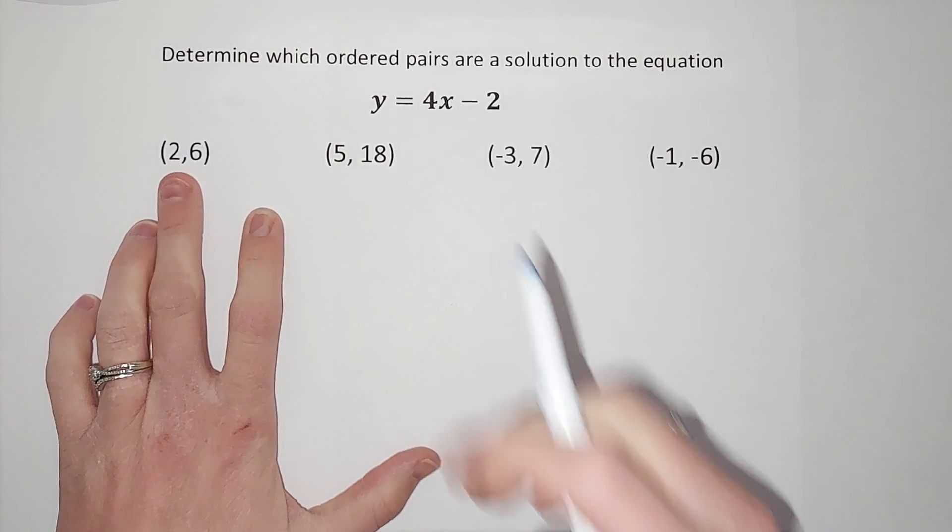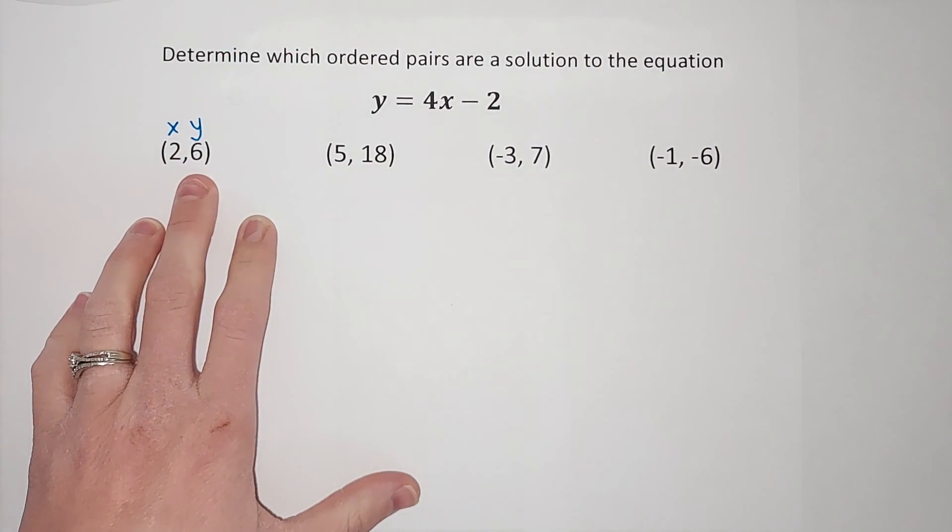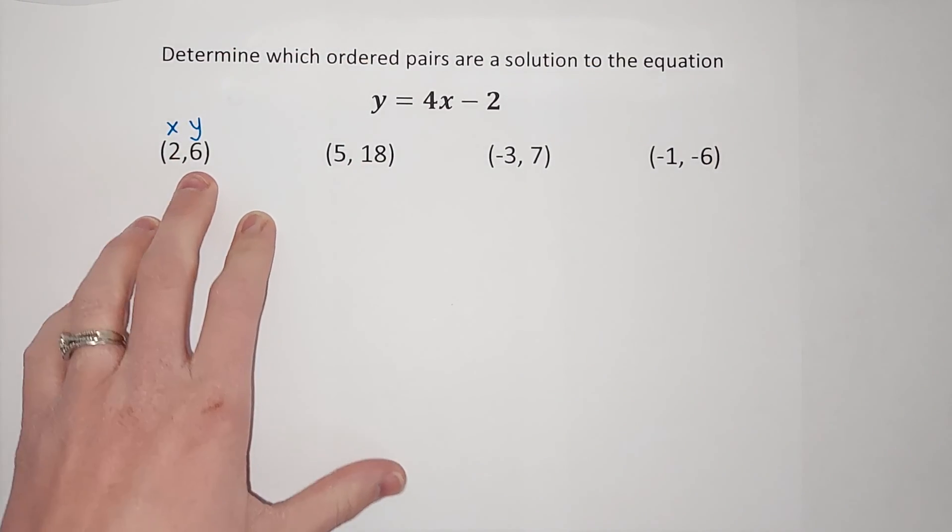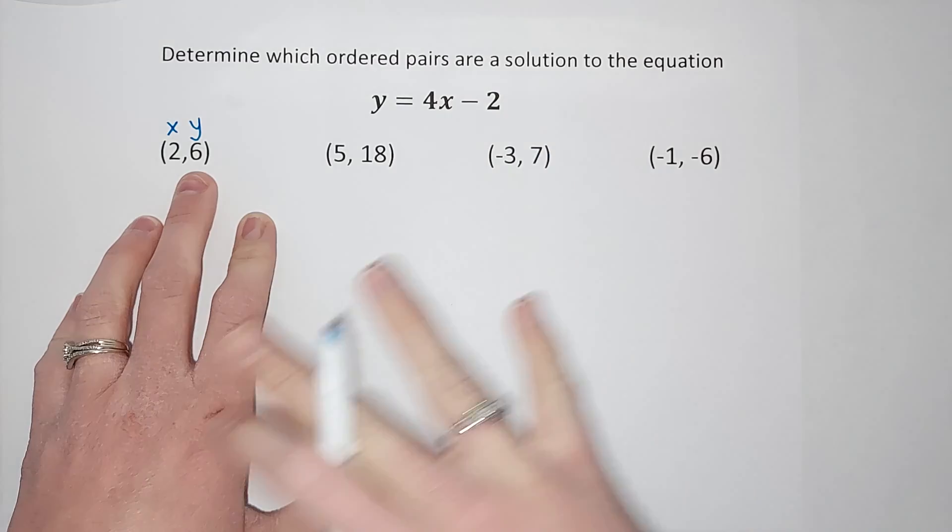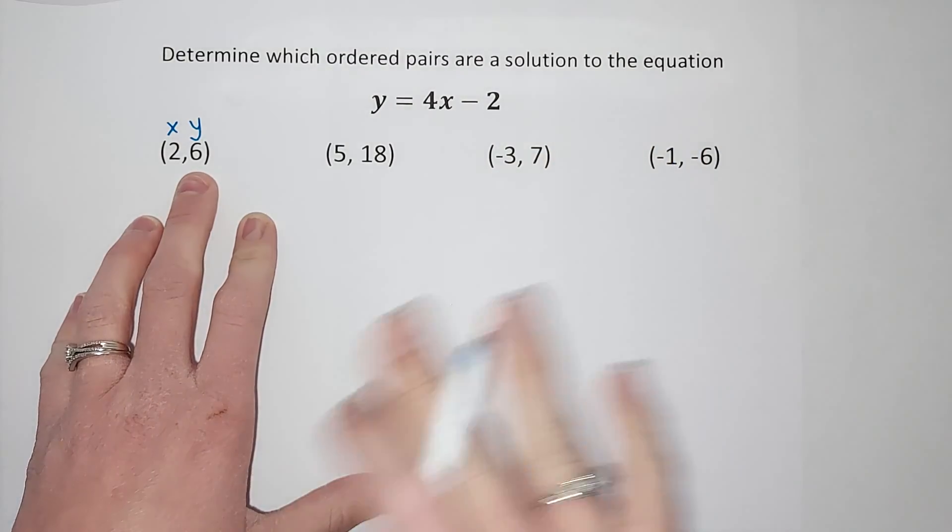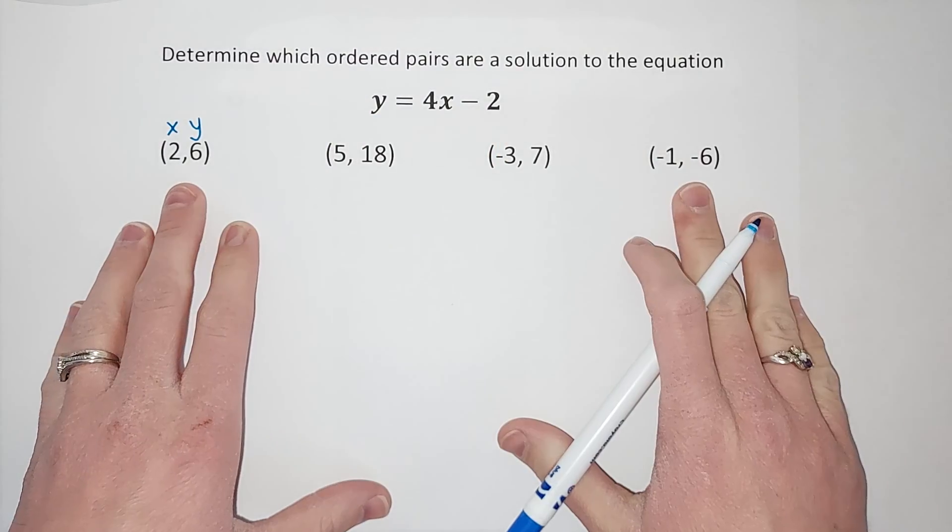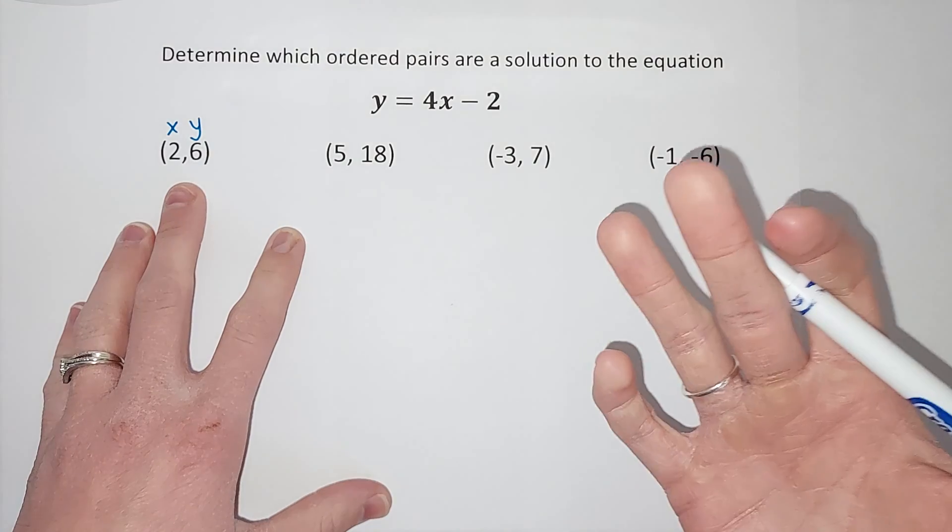So, when I have an ordered pair, my first number is considered an x, second number is considered a y. So, we want to know, this equation could be graphed as a line. If you haven't gotten to that point in your math journey yet, don't worry, we're not going to graph it yet. But this could be graphed as a line, and we're wondering if these points are on that line.